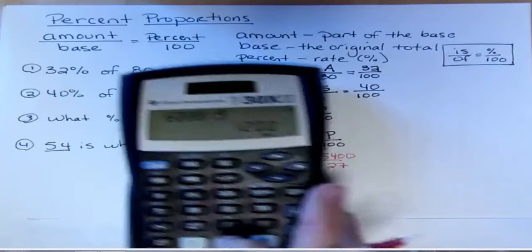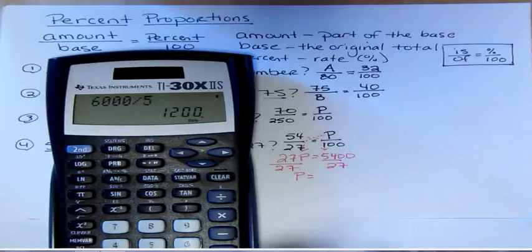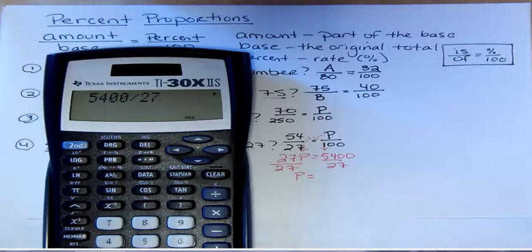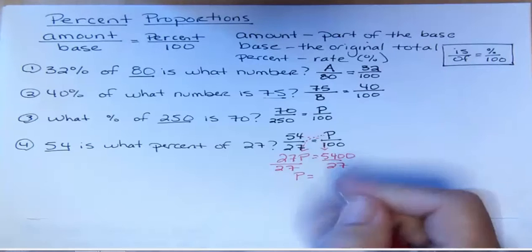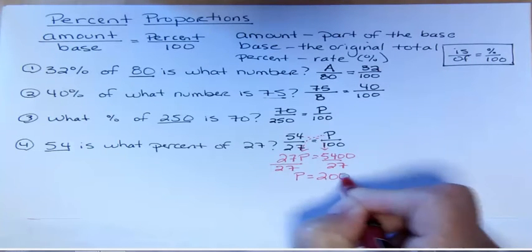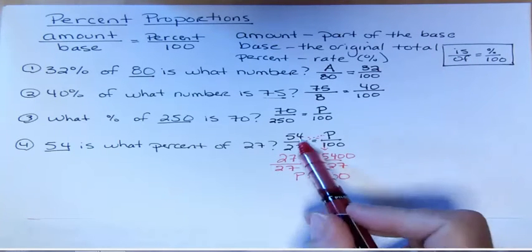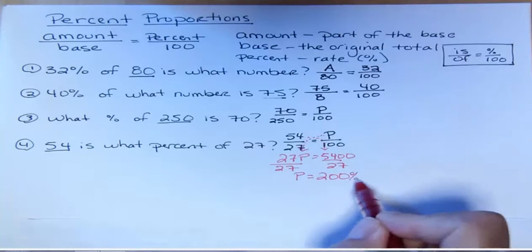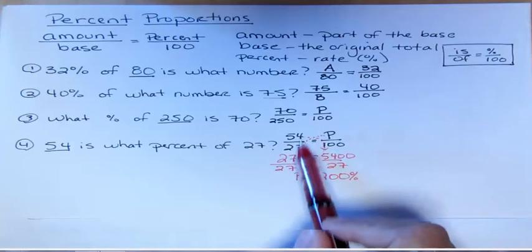I want you to remember: you don't have to be a whiz at mental math to be good at math, but if you're not good at mental math you need to get to know how to use your calculator. So P equals 200. In other words, 54 is 200 percent of 27. That makes sense, right? Because it's twice as big, it's 200 percent. 27 would be 100 percent of itself.